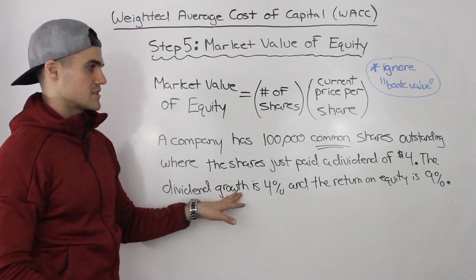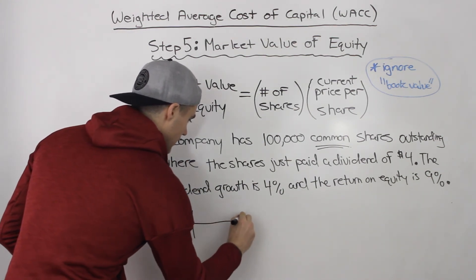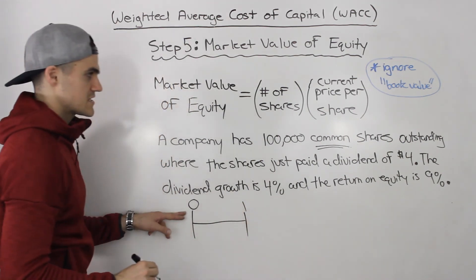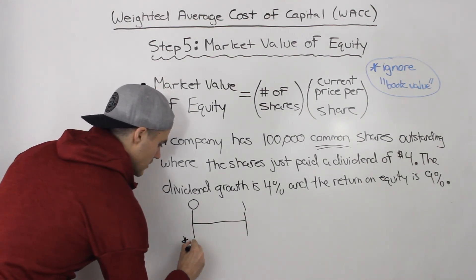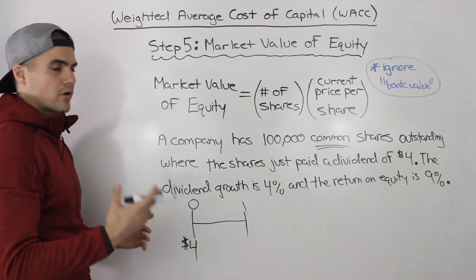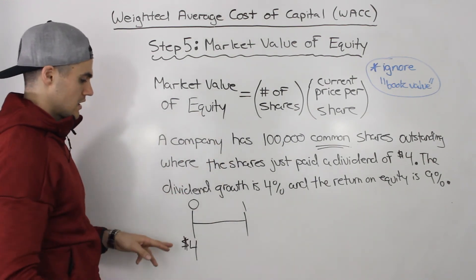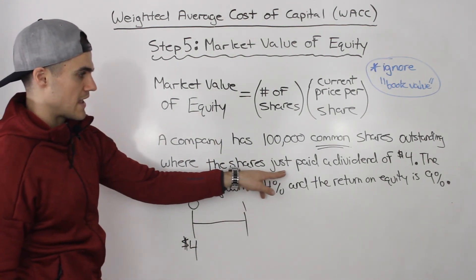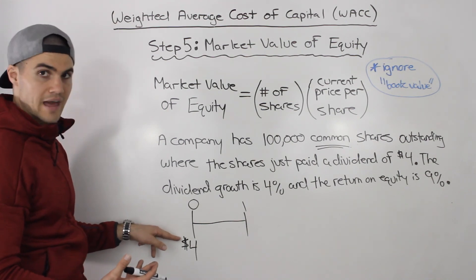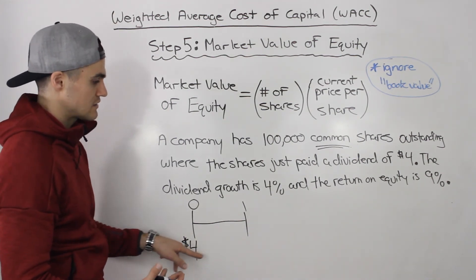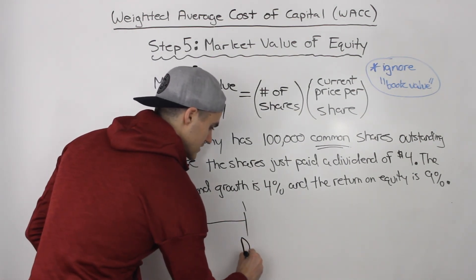Notice how the dividends of this stock are growing at a constant rate. If we draw a timeline, at time zero a dividend of $4 was just paid. The price of a stock equals the present value of all future dividends, so because that $4 was just paid, it won't be part of the price. We need to use D0 to find D1 — the next dividend coming up.